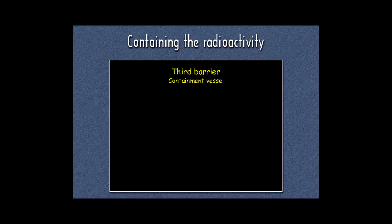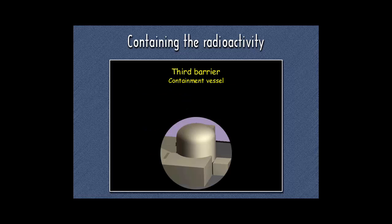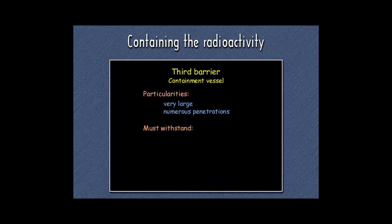The third barrier — the containment vessel — is extremely large and of apparently simple geometry, but it is traversed by numerous pipes and cables which can constitute weak points where leakage can occur. The risk is associated with thermal stresses and overpressure in the event of a sudden release of a large amount of steam in the reactor building.